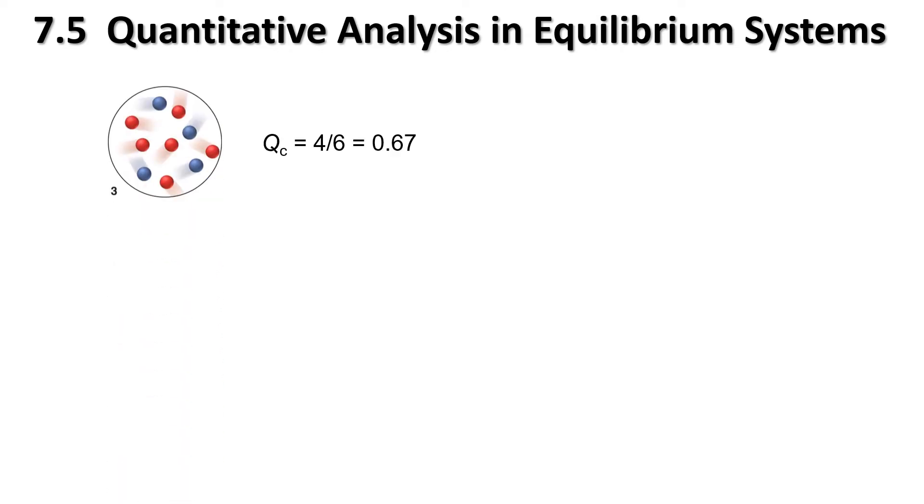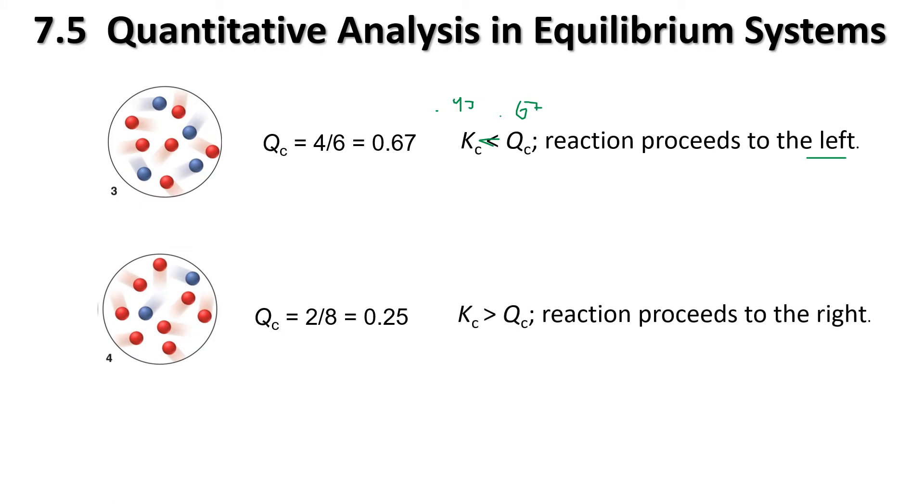For number three, we've got four divided by six is 0.67. So, comparing, this one's 0.43, and this one's 0.67. So, K is less than Q. So, it's going to go to the left. And then the last one here, 0.25, this one is going to go to the right. Notice the direction to the right. So, that's going to be important when we get to our ice charts. That's going to tell us if the reactants or products are doing the plus or the minus X value.